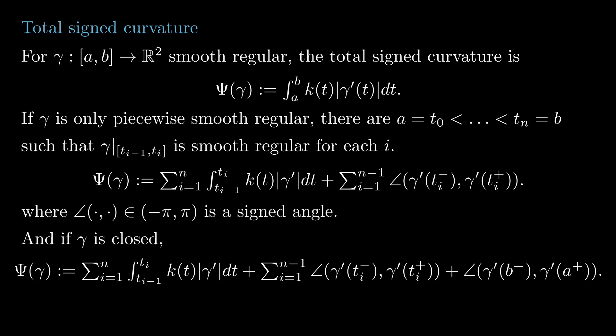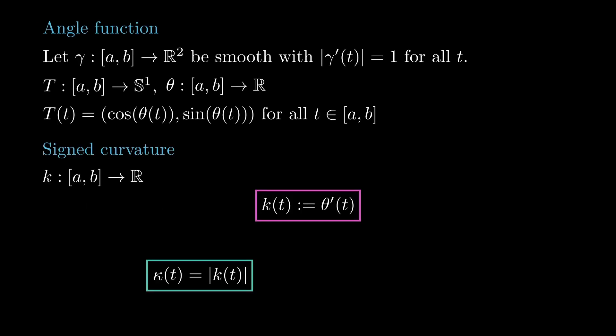From the triangle inequality and the fact that the absolute curvature is the absolute value of the signed curvature, we can deduce that the total signed curvature in absolute value is always at most the total absolute curvature. This is very natural, as ψ measures the total displacement of theta, while φ measures the distance travelled by theta.